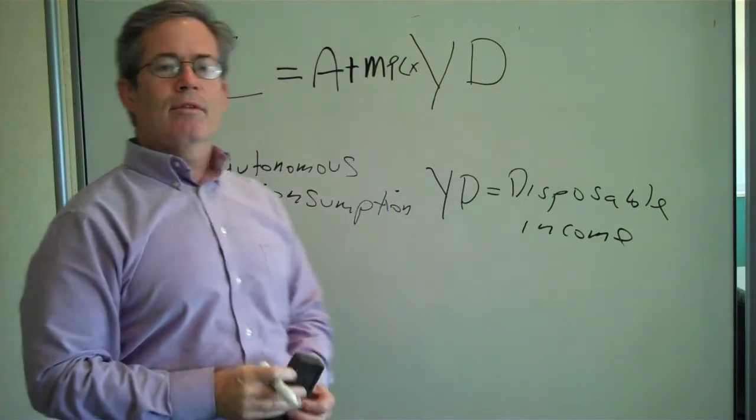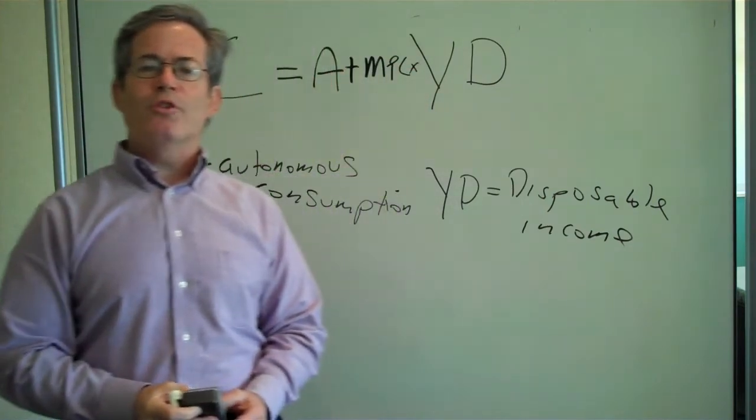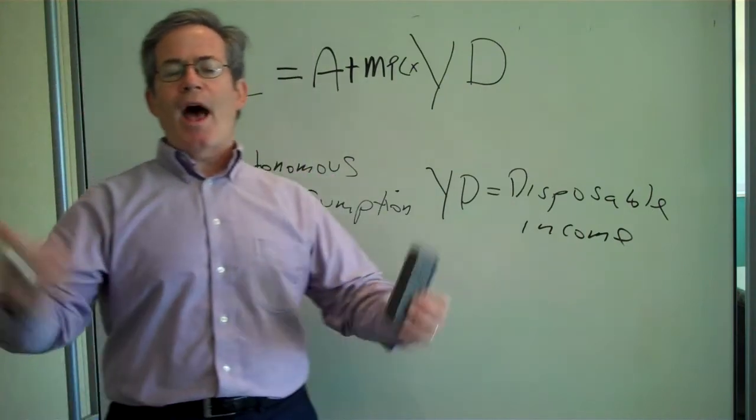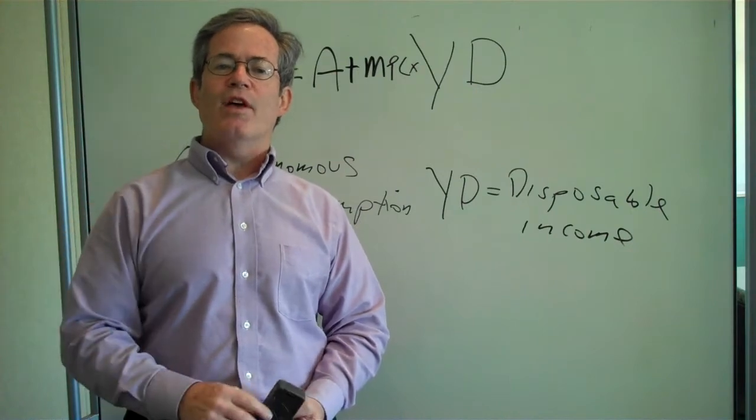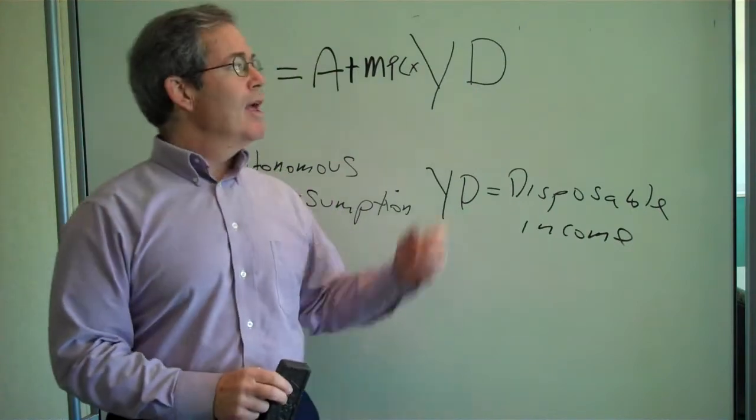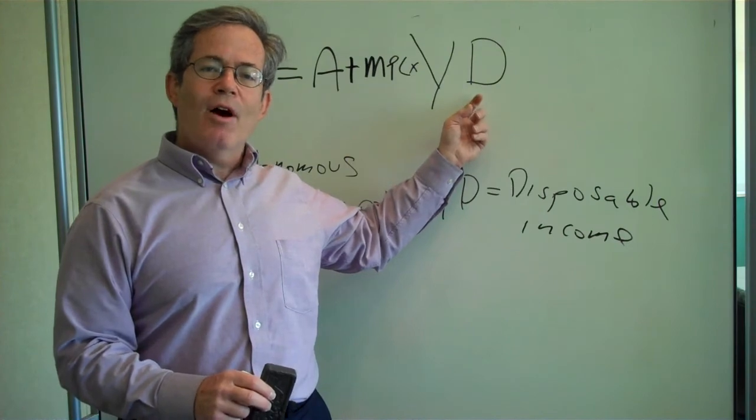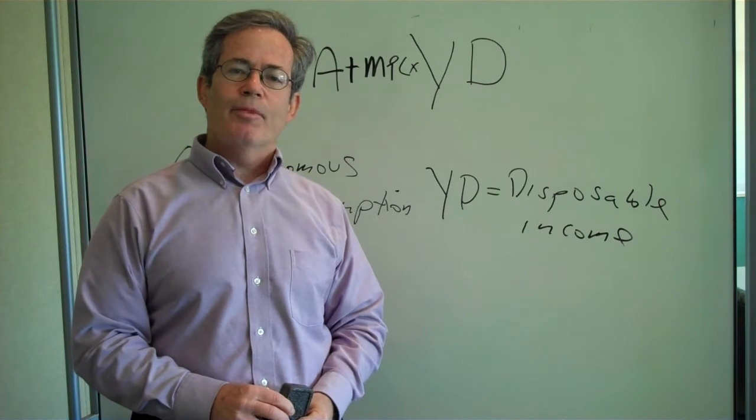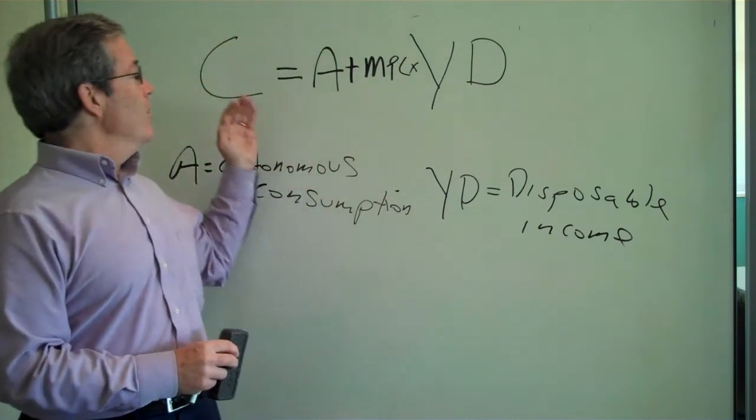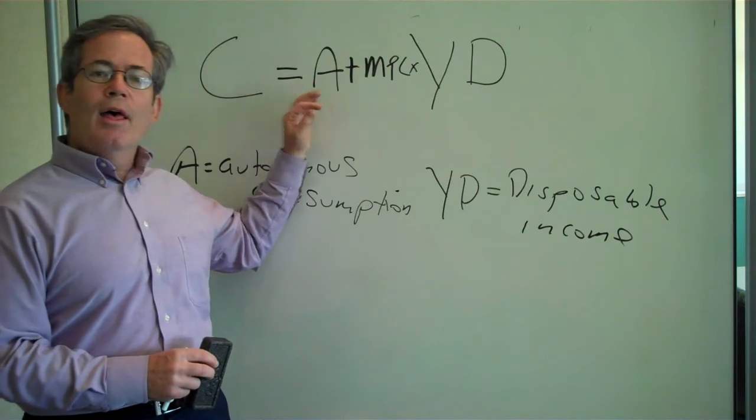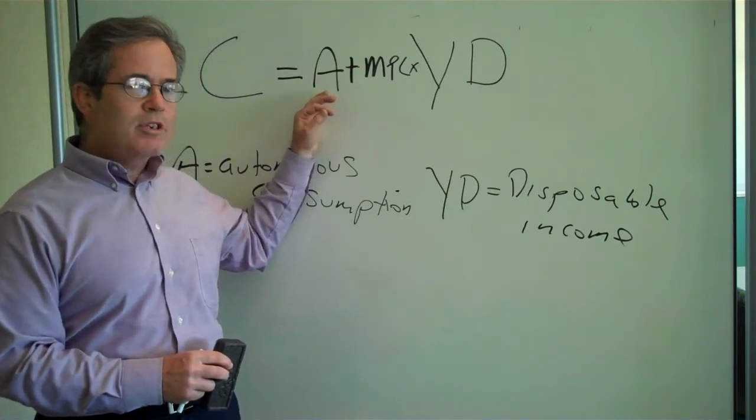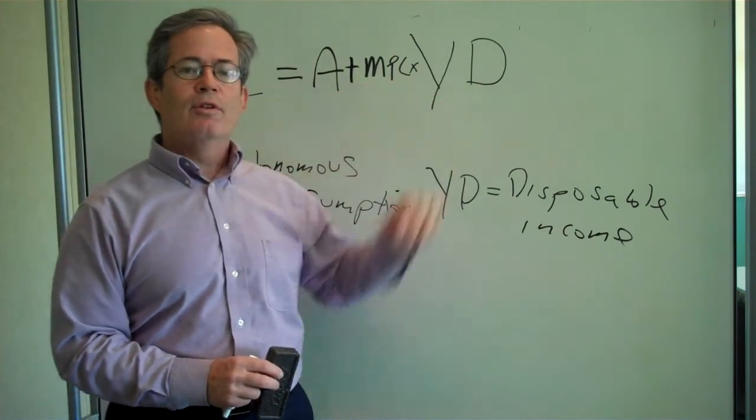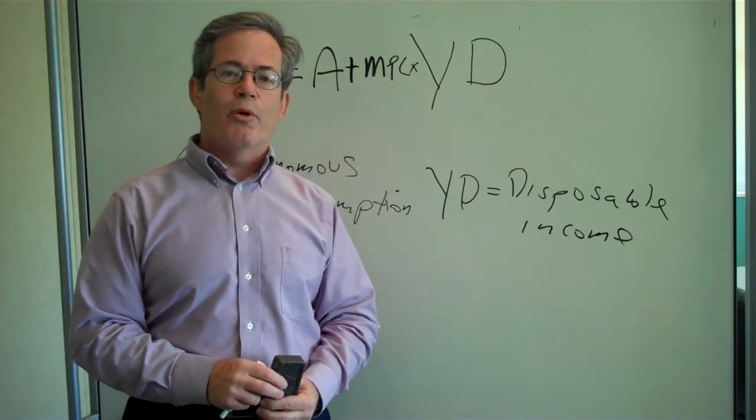So economists have defined something called the marginal propensity to consume, or MPC. Let's say out of every dollar, you consume 50 cents and save 50 cents. That means the marginal propensity to consume is one-half. So here we have our consumption theory: Consumption equals autonomous consumption, which you will spend no matter how much income you have, plus, say, a half of every additional dollar you have in disposable income.